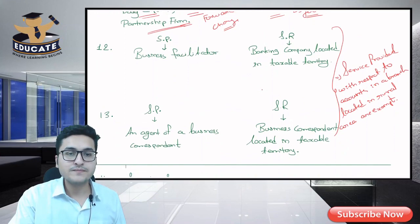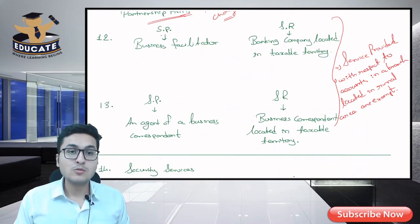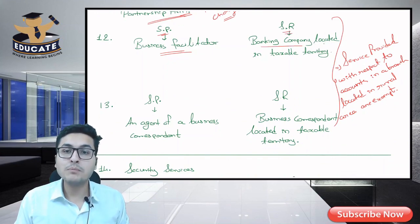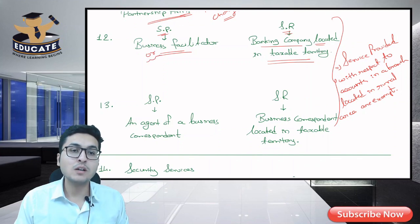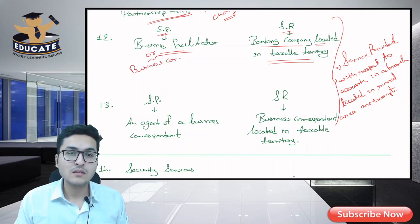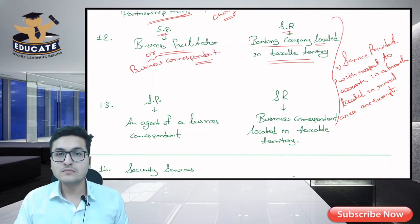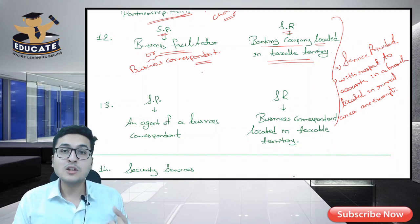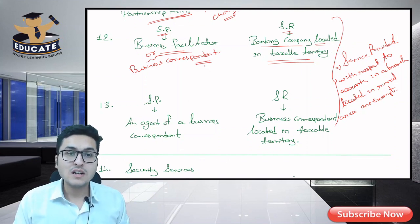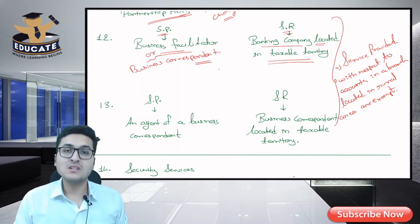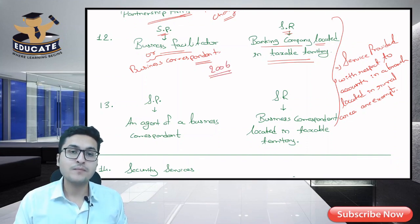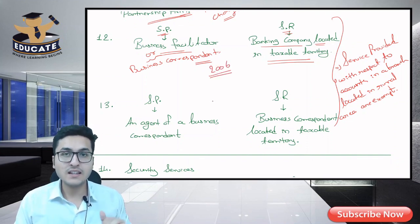Next: business facilitator. Service provider is a business facilitator; service receiver is a banking company located in taxable territory. Business facilitator and business correspondent are similar terms. This concept was introduced in 2006 because 40% of India's population did not have access to banking facilities.